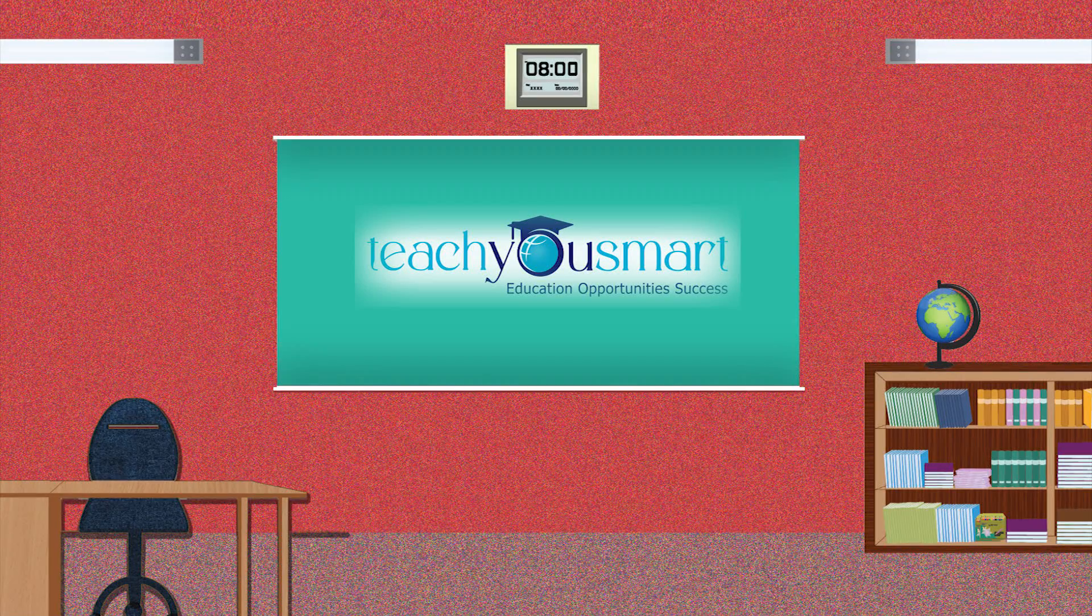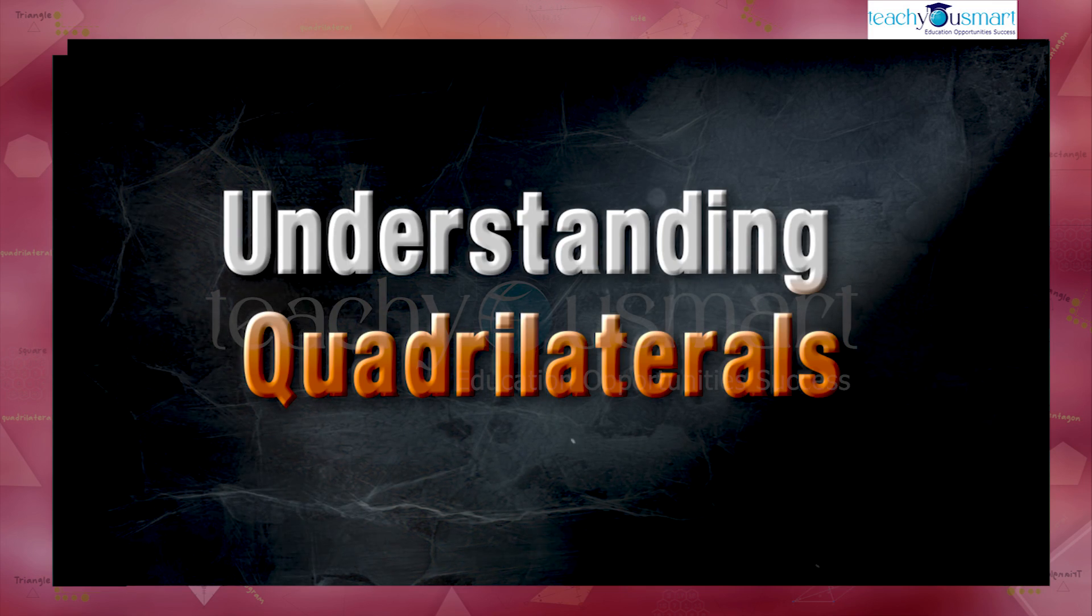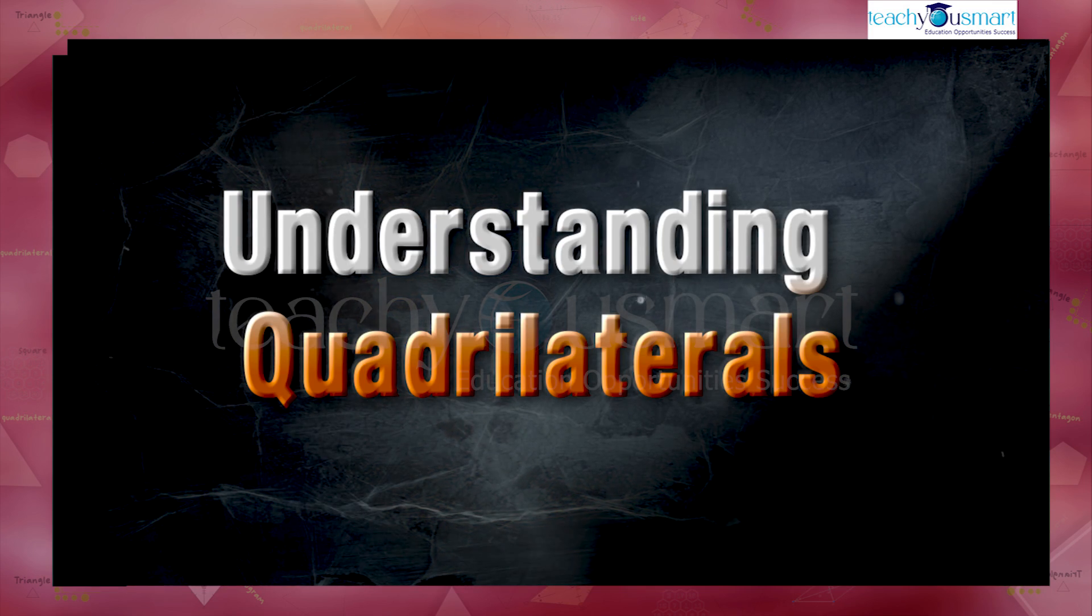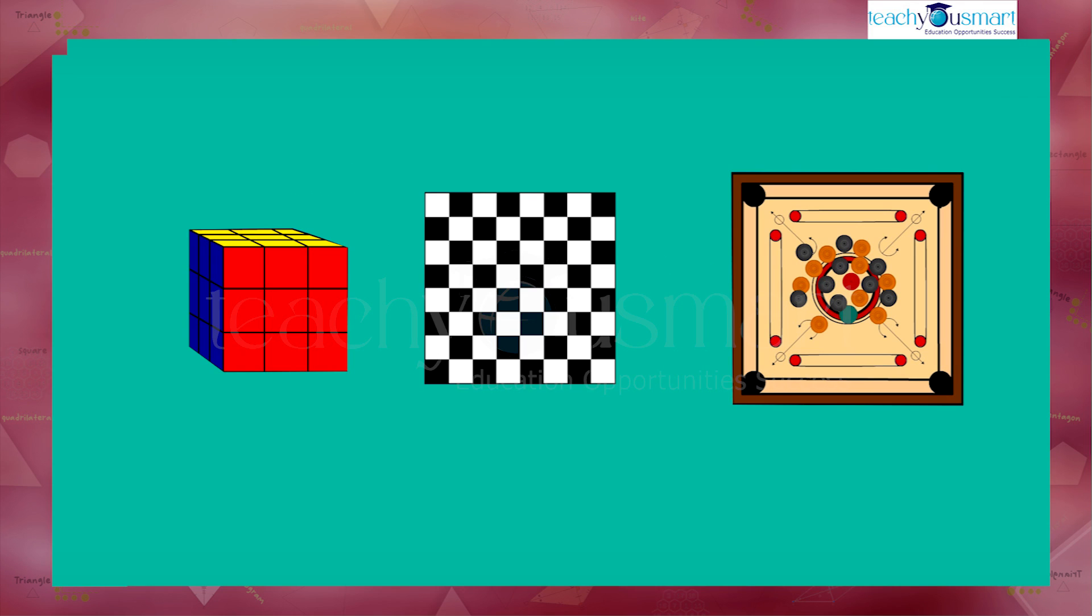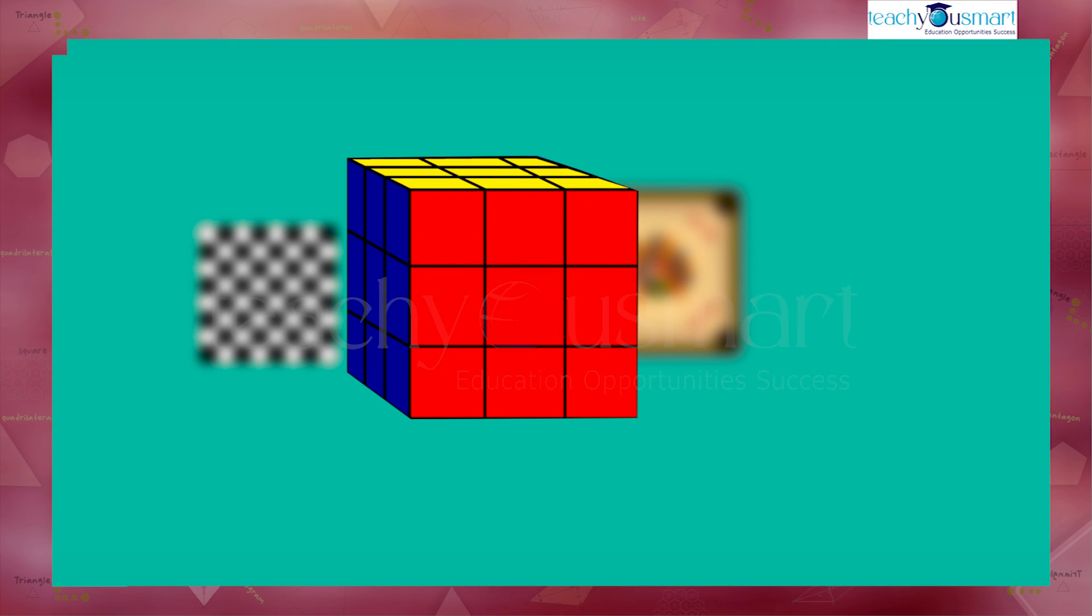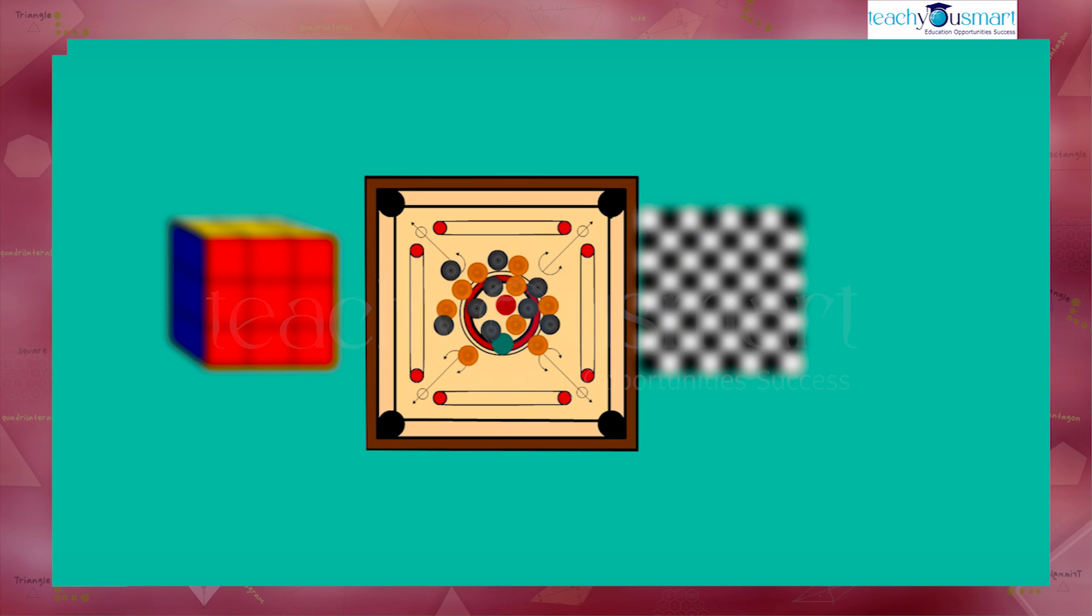Hello students, let's continue our journey through understanding quadrilaterals. Today we are going to discuss a special parallelogram: the square. Look here, some figures are given - the face of a Rubik's cube, a chess board, and a carrom board.